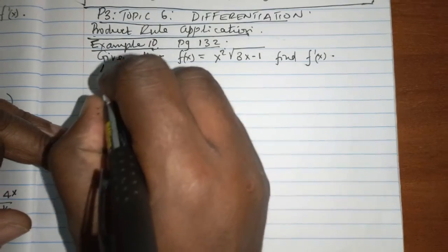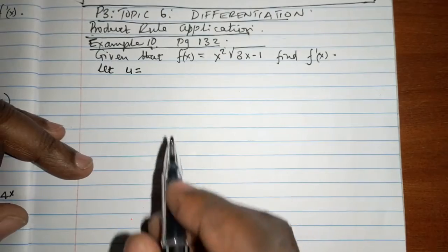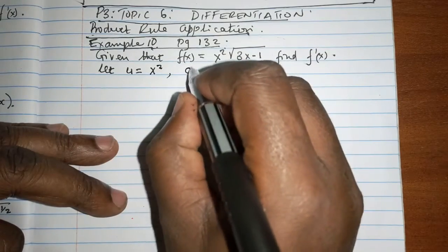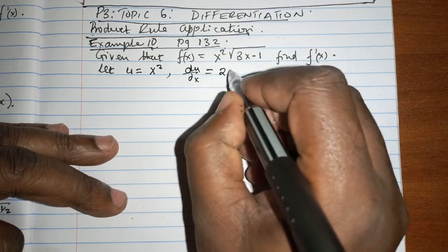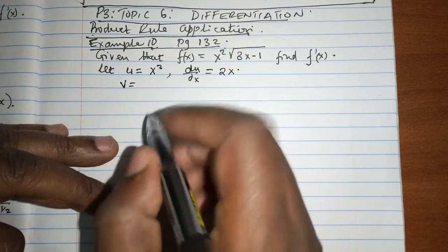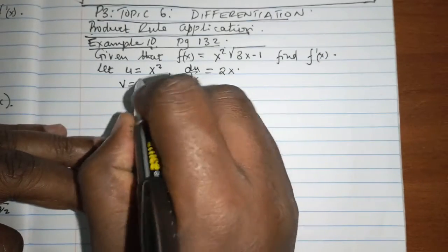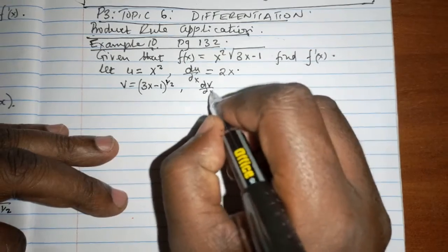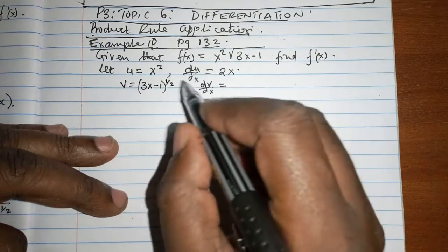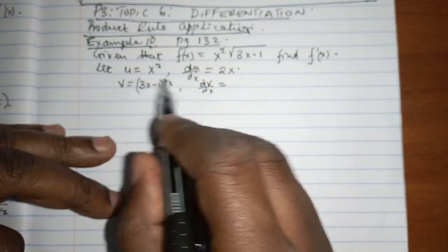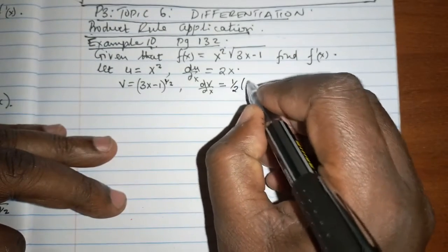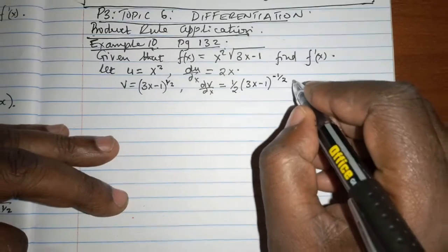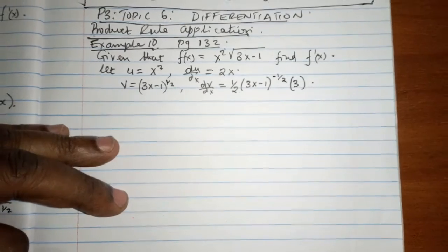We let u = x², so du/dx = 2x. Then v = (3x - 1) raised to the power of a half because of the square root. For dv/dx we are going to use the chain rule: the derivative is one half times (3x - 1) raised to the power of negative one half, multiplied by the derivative of the inside part which is 3.